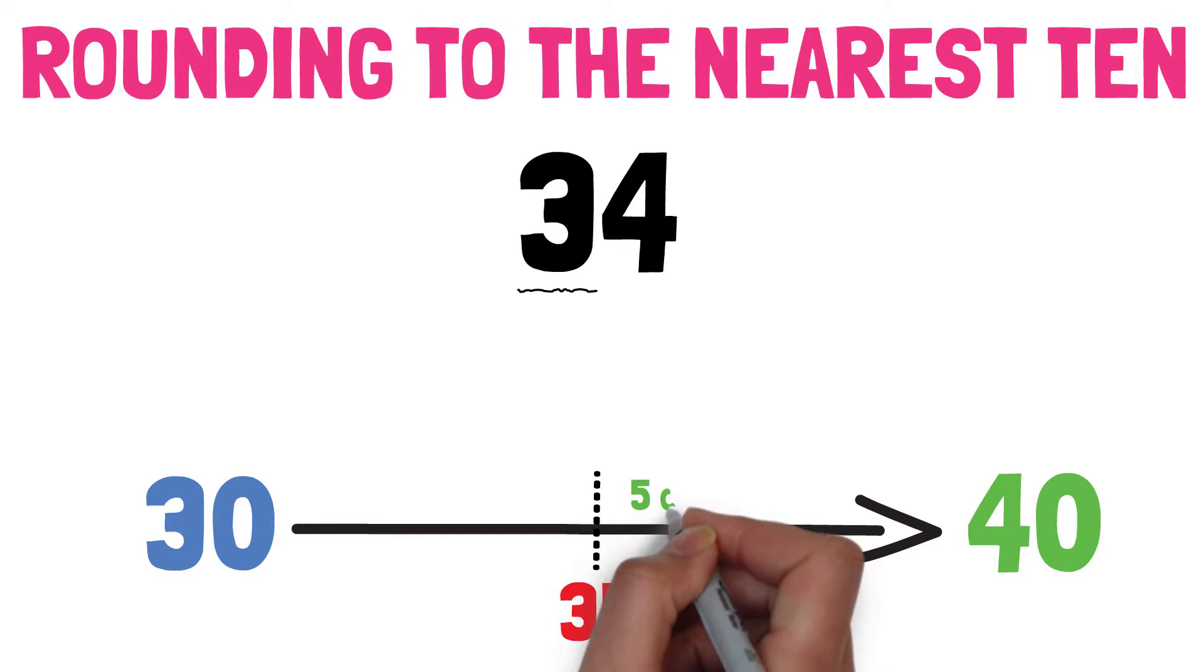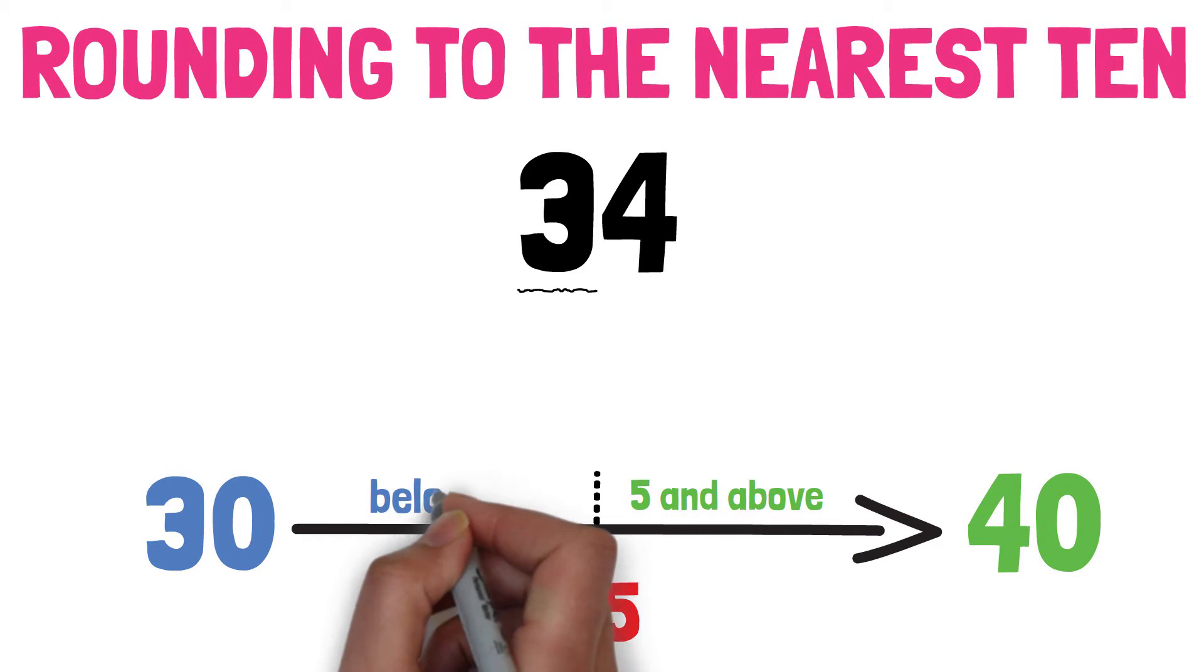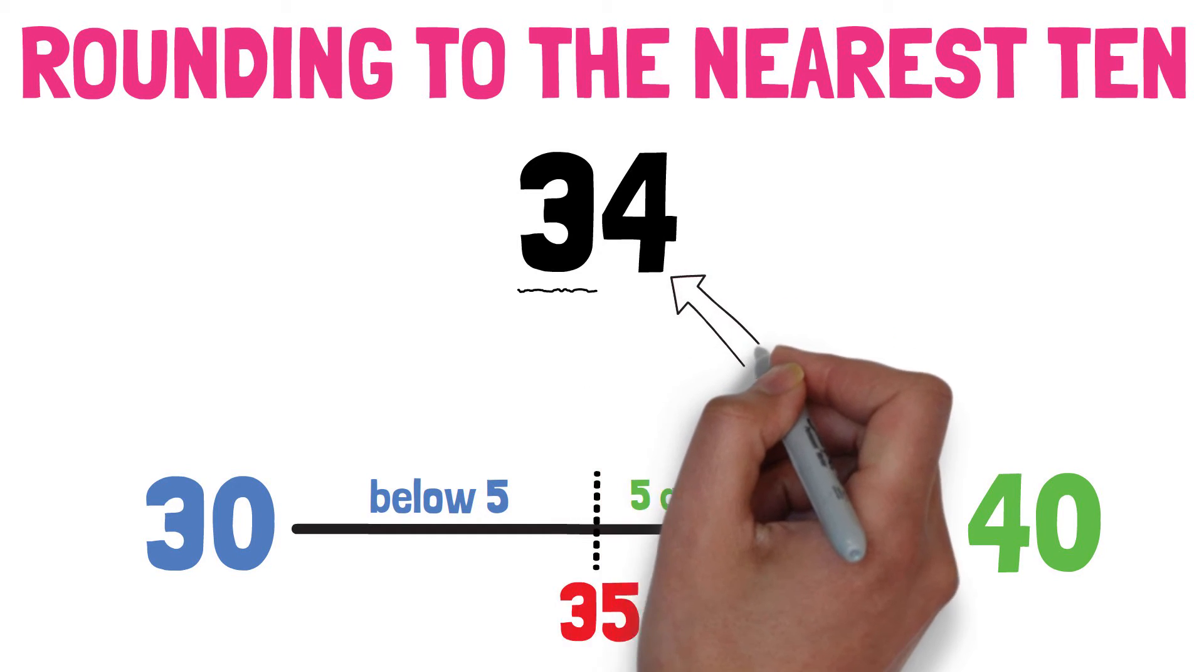We now have two sides. The side on the right is where the one's digit is 5 or bigger. The side on the left is where the one's digit is smaller than 5. Now, remember, we are rounding to the nearest ten.